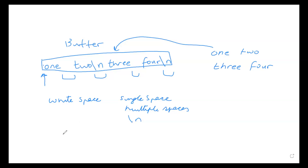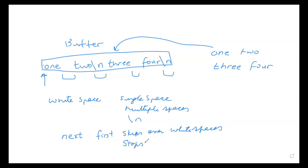When you ask the scanner to do next(), it's going to start — because the scanner has no idea what you're going to input — all it knows is it has to keep pulling the input until it reaches a white space. The way next() works is that first the scanner skips over white spaces, then stops when it reaches the next white space. So right here there is no white space, so the scanner says 'I have to start looking at tokens, start the tokenizing process,' and then it moves until it finds the next white space. Then 'one' becomes a token, which gets returned by the next() function.